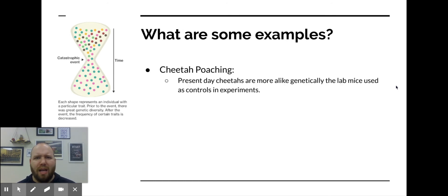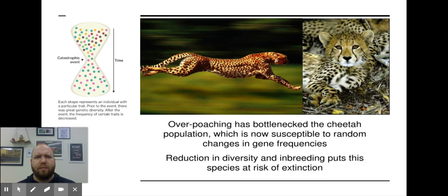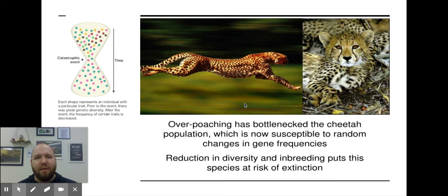Here's an example: cheetah poaching. During the late 1800s and early 1900s, cheetah populations were decimated from poaching — that was their catastrophic event. The cheetahs that are left had to interbreed so much that they are actually more genetically alike than the lab mice we use as controls in experiments. This makes them very susceptible to diseases because any resistance that existed in the original population no longer exists — those genes were lost. The modern cheetah is a very different version than the one on the planet 100 to 200 years ago.